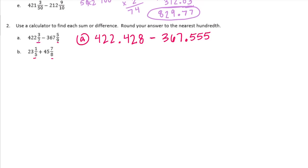Now I'm going to round to the nearest hundredth because it told me to. So round to the hundredths place. That would turn this into 422 and 43 hundredths minus 367, and there's the hundredths place. So this turned into 56 hundredths. Now let's subtract.